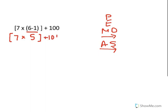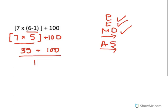Do I have any more parentheses? Yes — the brackets are considered parentheses. So I'm going to do seven times five, which is thirty-five, plus one hundred. I have no more parentheses, no exponents, no multiplication or division. All I have left is addition and subtraction, and that gives one hundred thirty-five. Now I want you to do the back three on your own.